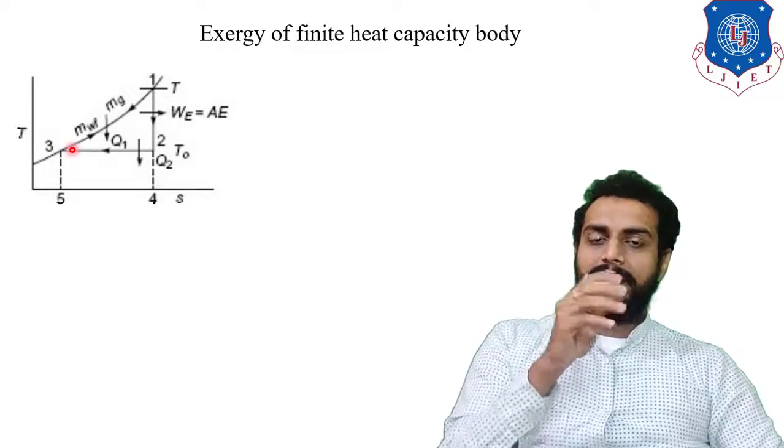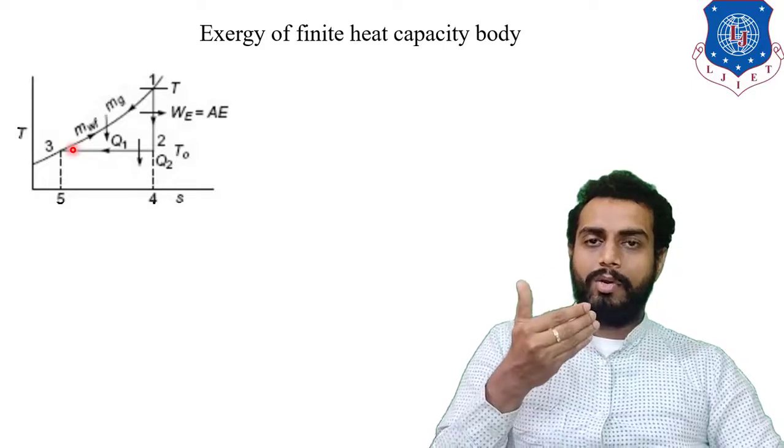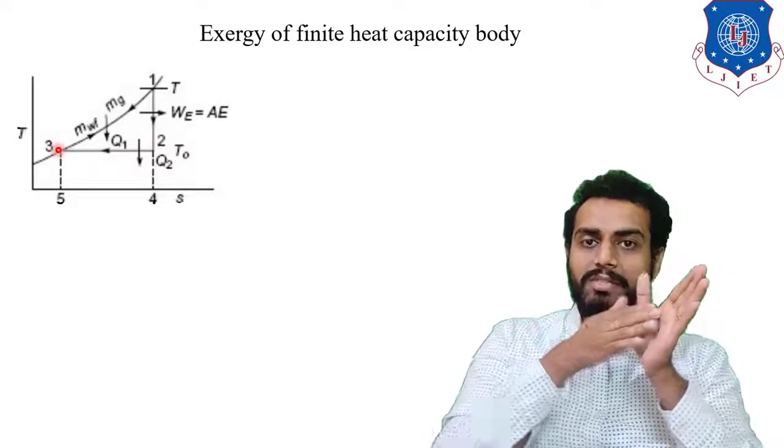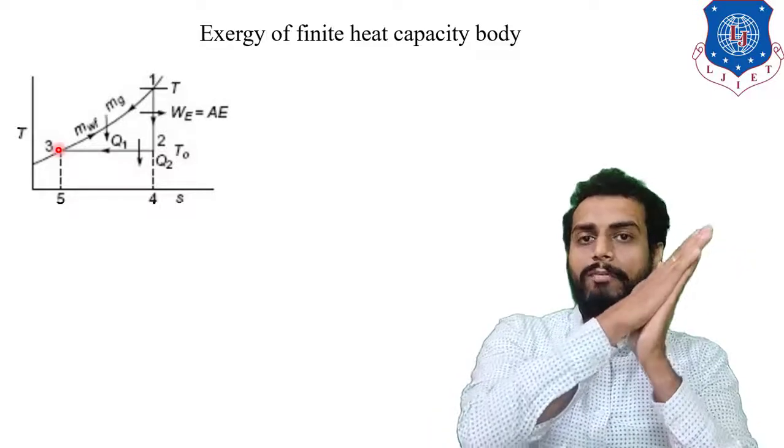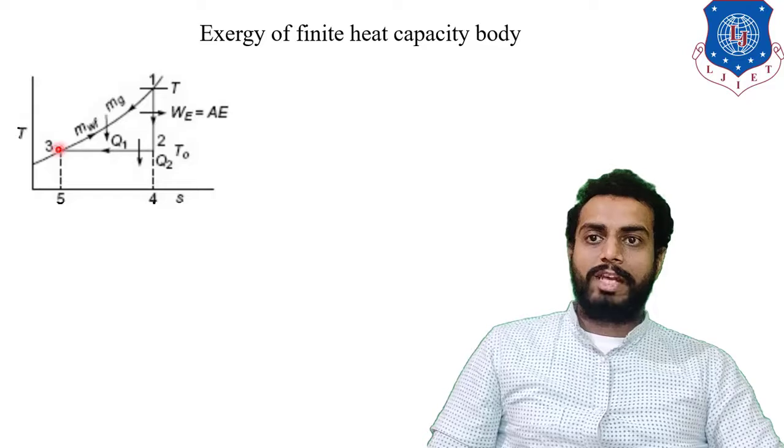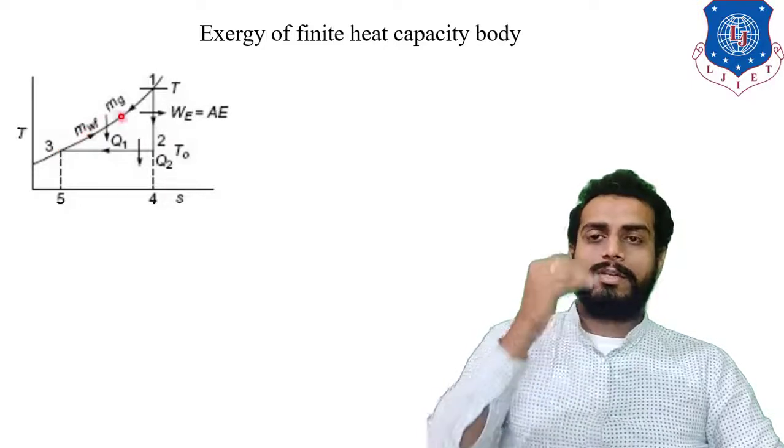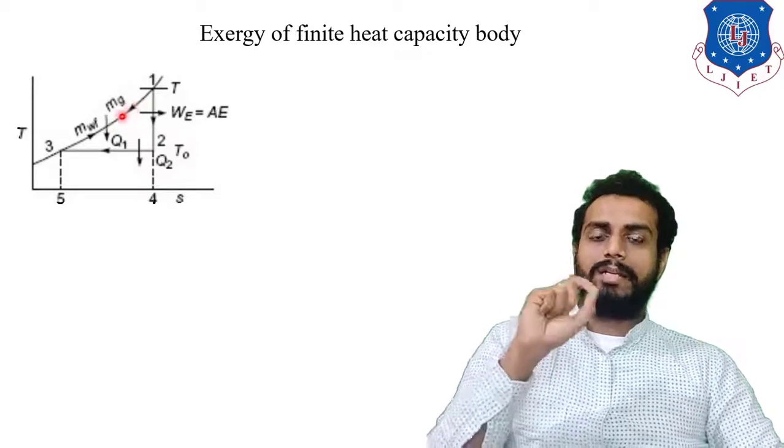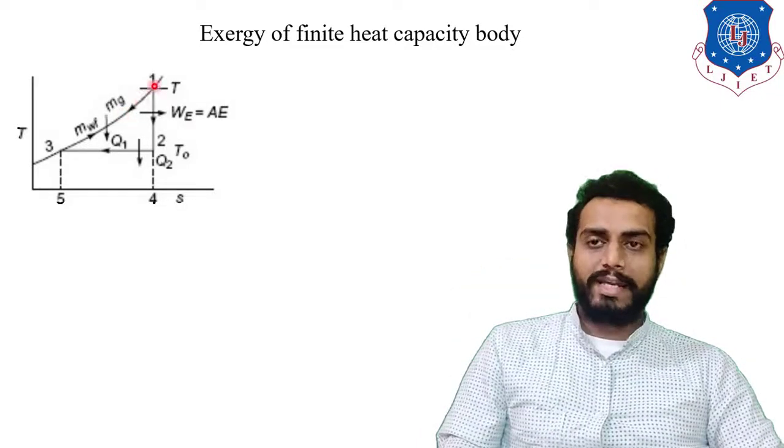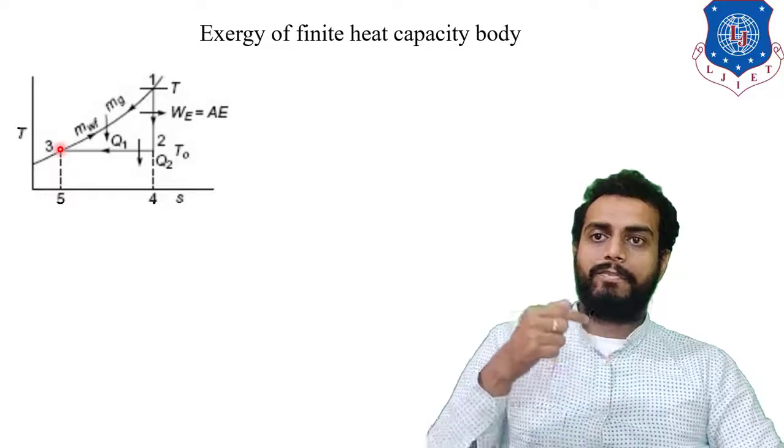Now simultaneously whatever amount of heat is rejected in cooling down the hot gas same amount of heat is gained by a working fluid, reversibly. Remember students these processes are taking place reversibly. So now what we are doing simultaneously constantly in contact with this hot gas we are having one working fluid which is also passing on the other side in the reverse direction. So the working fluid which is initially at T0 is getting temperature or heat from the hot gas and it is reaching to the temperature of T. So at any instant if you will take the temperature difference between working fluid and hot gas that will be zero ideally because of the heat transfer. So the hot gas will get cooled down from 1 to 3 and this working fluid will get heated up from 3 to 1.